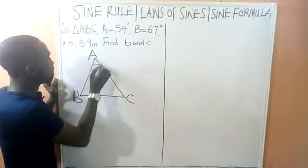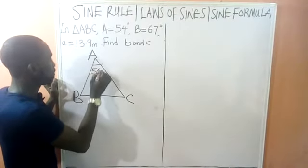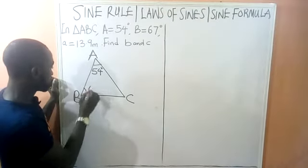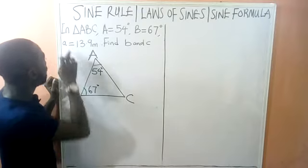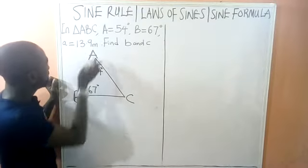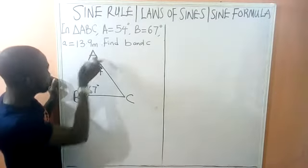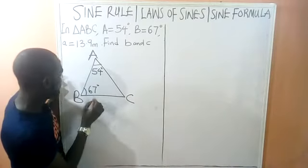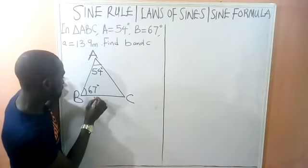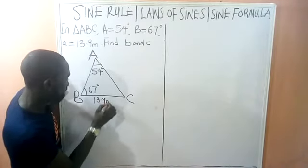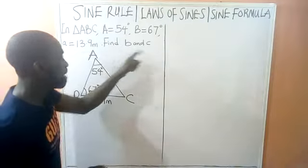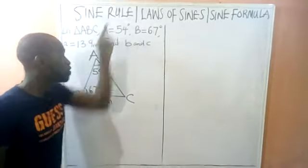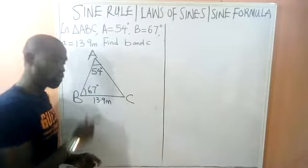Let's supply all the given data. Angle A is given as 54 degrees, angle B is given as 67 degrees, and small a — the side facing angle A — is 13.9 meters. We need to find b and c. Now, how do we know we will use the sine rule to solve this triangle?